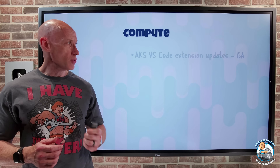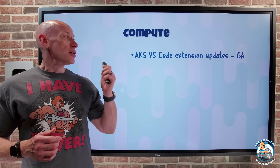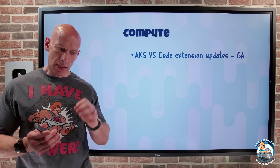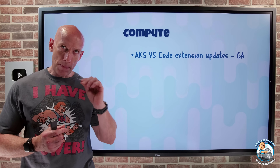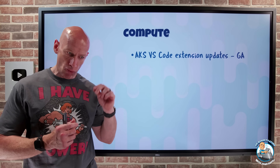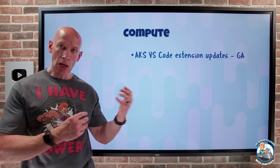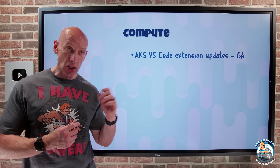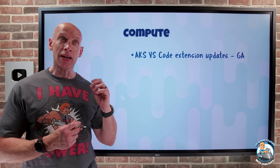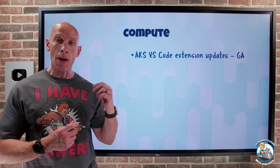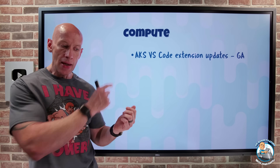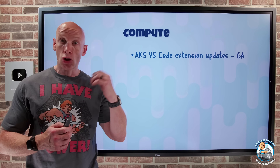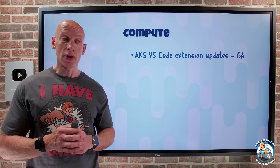On to what's new on the compute side. The Azure Kubernetes Service VS Code extension has had some updates. This is really around the ability to add an Azure Container Registry to your cluster. I can generate Kubernetes deployment files, Docker files, and even GitHub Actions — all now within that AKS extension, which you can get from the marketplace. Make sure you're running the newest version.